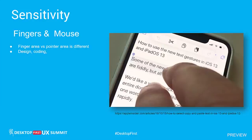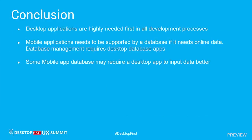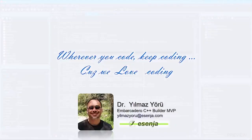Another point is sensitivity — a finger area and a pointer area are different. If you are using a mouse, you can design much more precisely and with much better graphics. In conclusion, desktop applications are highly needed first in all development processes. Mobile applications need to be supported by a database if they require online data, and database management also requires desktop applications. Some mobile applications may also require a desktop application to input data better. Keep coding — that's all, thank you very much.